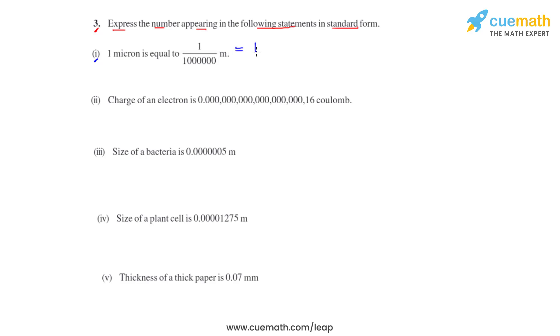We can write it as 1 over 10 raised to 6, which can be written as 10 raised to negative 6, because when 10 raised to 6 goes to the numerator, the sign of the power changes. Finally, 1 micron equals 1 times 10 raised to negative 6 meters, and this is the standard form.